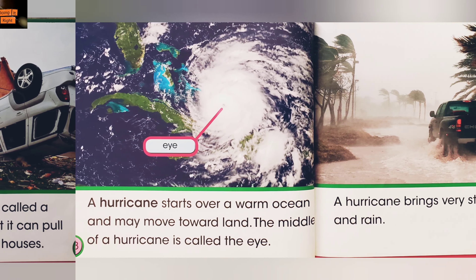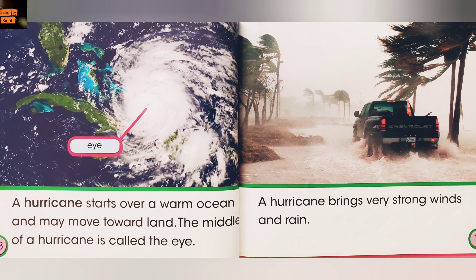A hurricane starts over a warm ocean and may move toward the land. The middle of a hurricane is called the eye. A hurricane brings very strong winds and rain.